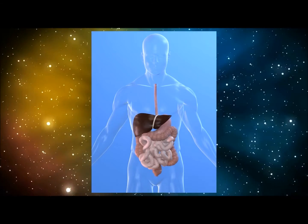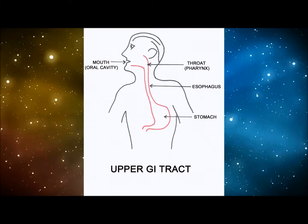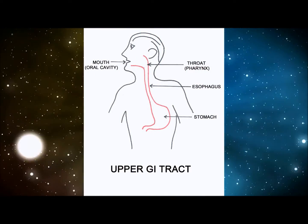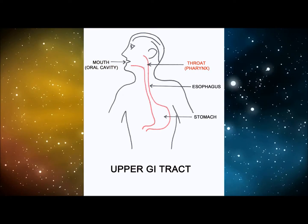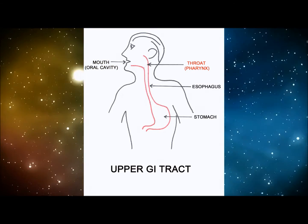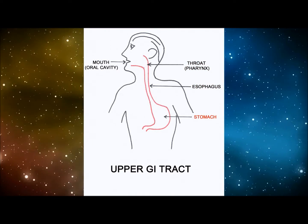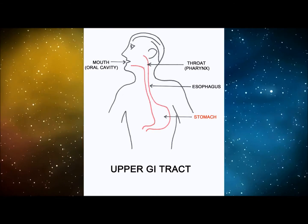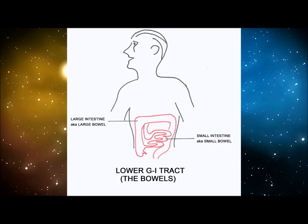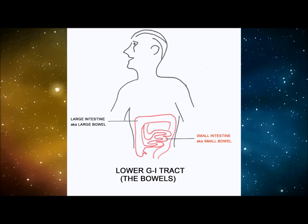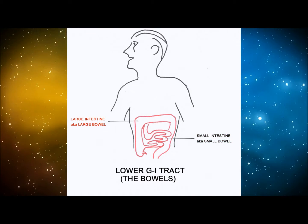The digestive system can be divided into two parts. The upper GI tract consists of the mouth, also known as the oral cavity, the throat, also known as the pharynx, the esophagus, and the stomach. The second part is the lower GI tract, which consists of the small intestine, also known as the small bowel, and the large intestine, also known as the large bowel.